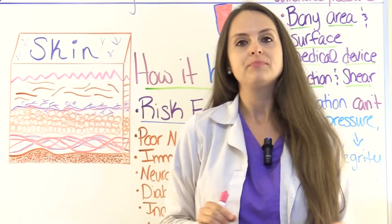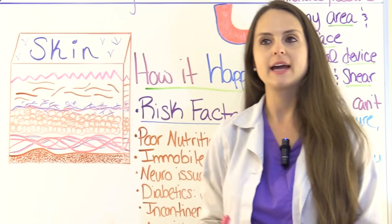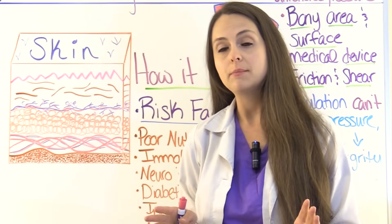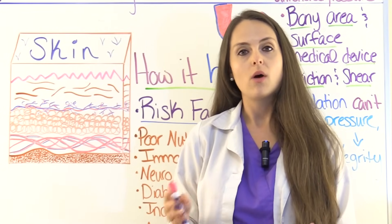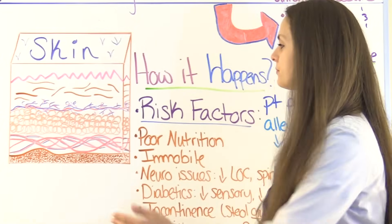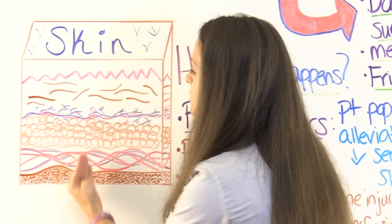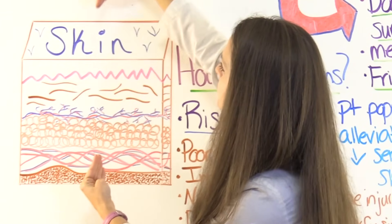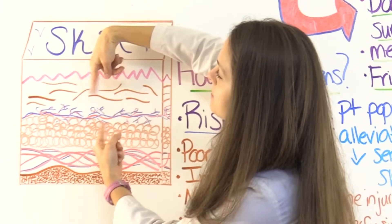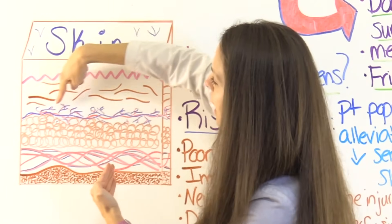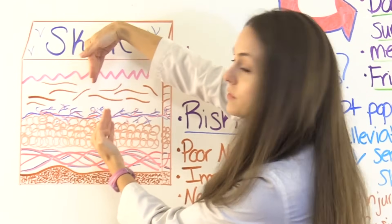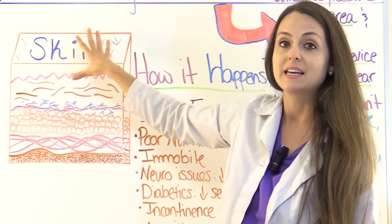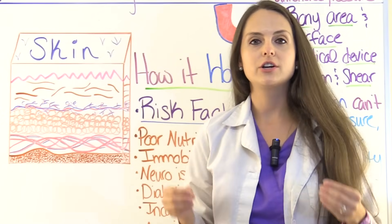Say we have a patient who has been sitting in a chair for a really long time. The bony prominence that puts them at risk is that coccyx bone. What happens is that the coccyx bone exerts pressure on those bottom layers, while the external hard surface — the chair — exerts pressure from the other direction. With two pressures coming together from opposite sides, they pinch off the blood supply to the skin — the epidermis and dermis — which leads to a pressure injury.